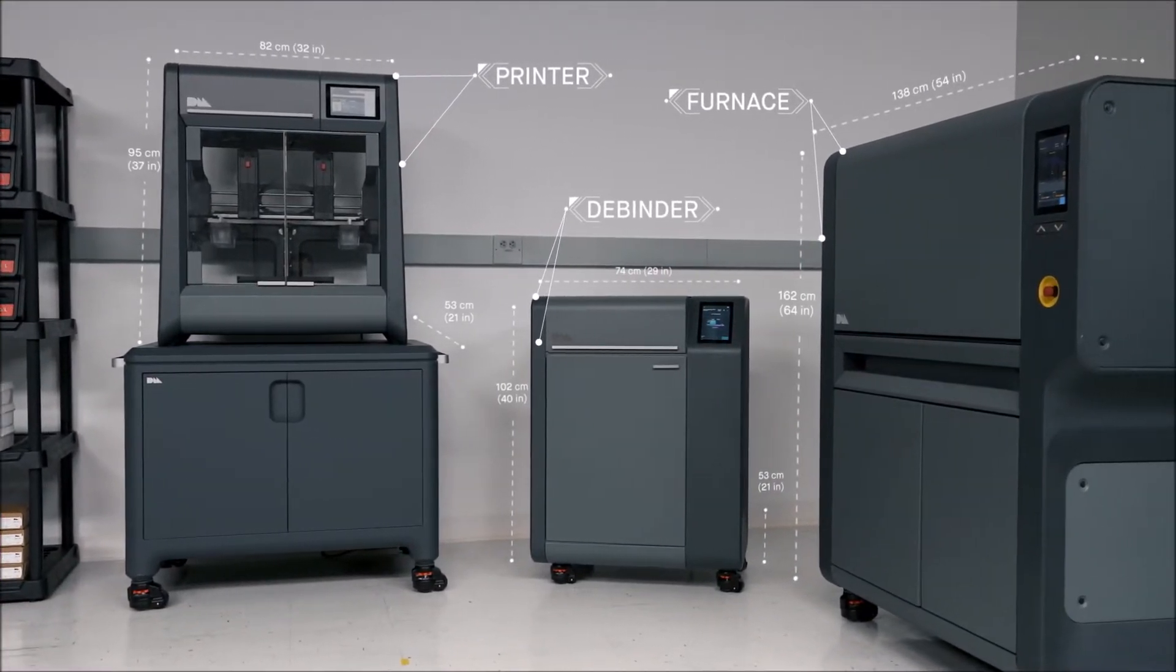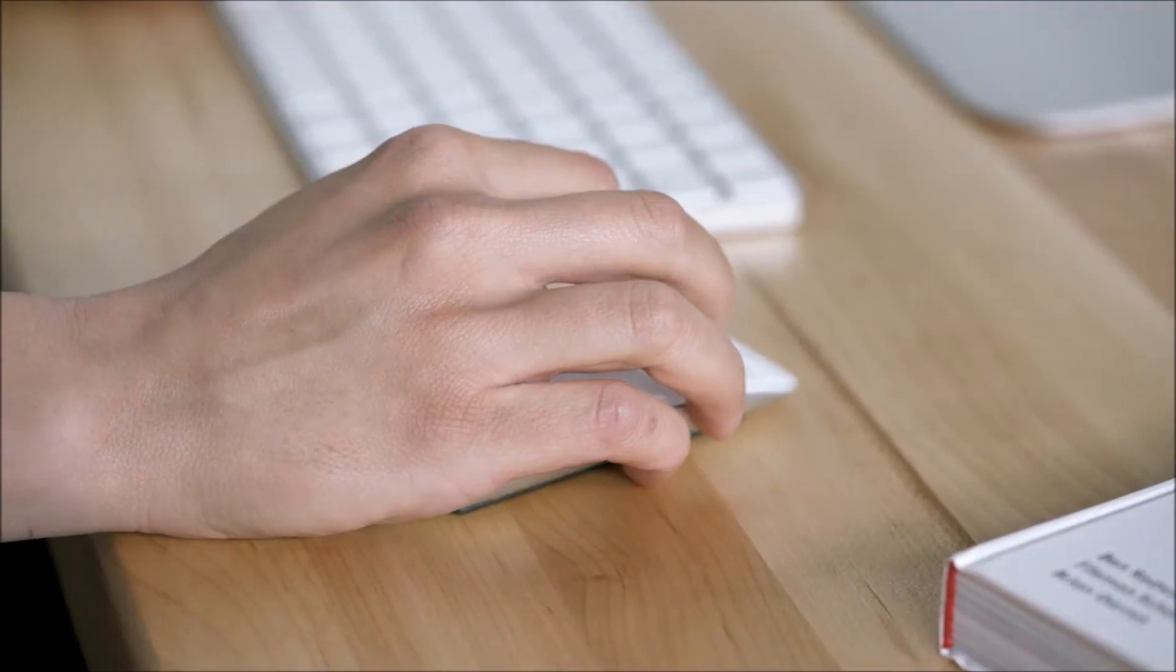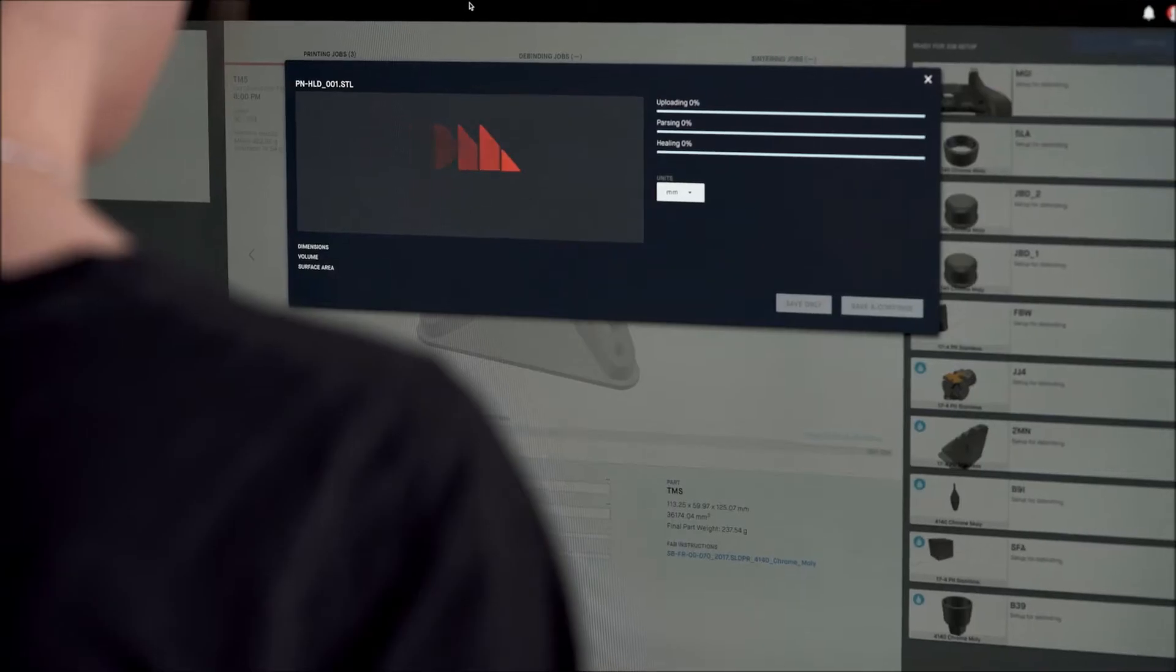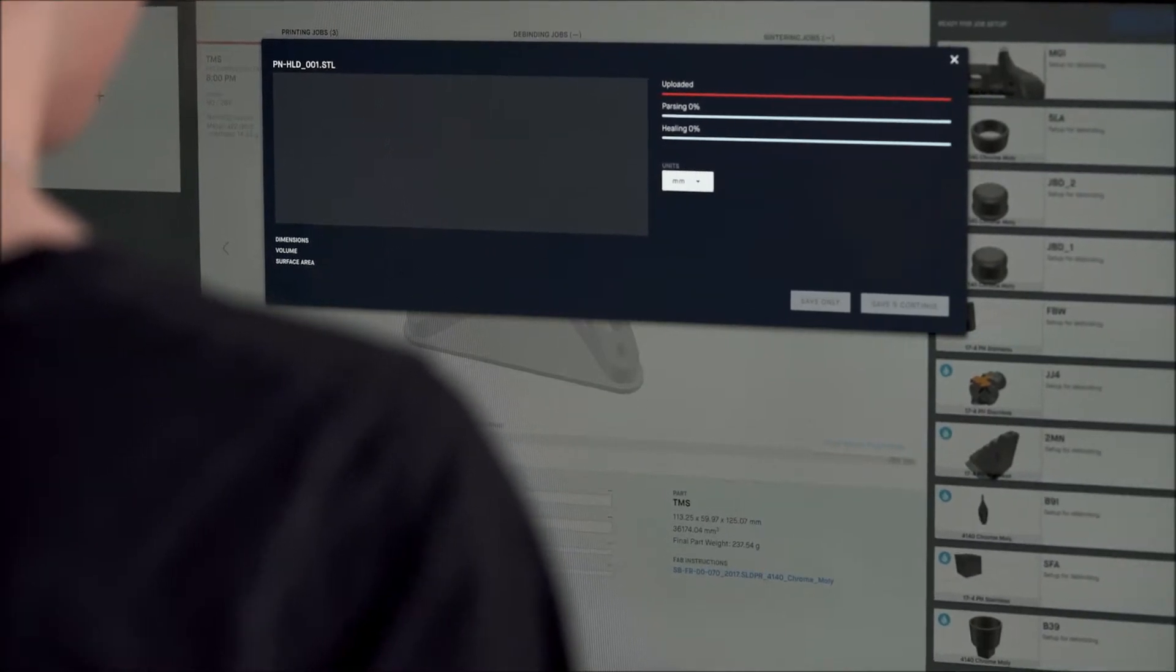The three-part system—the printer, debinder, and furnace—integrates with secure web-based software to deliver a seamless workflow to go from digital file to sintered part.